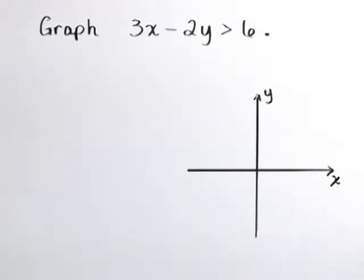Graph the inequality 3x minus 2y is greater than 6.